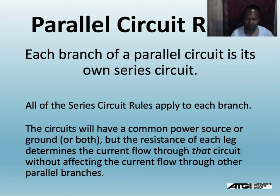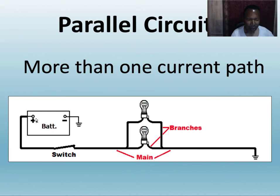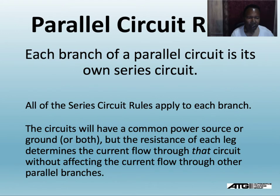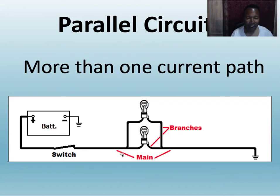The series circuit rules apply to each branch. Voltage is going to push electrons through the conductor, through the load, out the other side, and back to ground. Current leaves the battery, goes through the switch, through each load to ground. Basically, each parallel circuit has a series circuit within it. The circuits share a common power source or ground, but the resistance of each leg determines the current flow through that circuit without affecting the other.